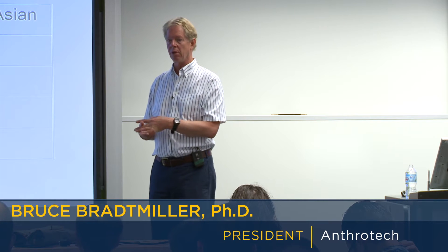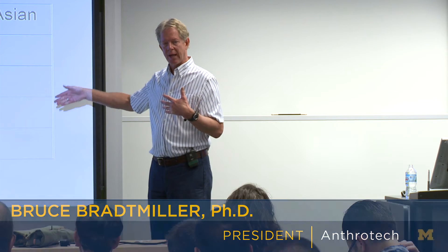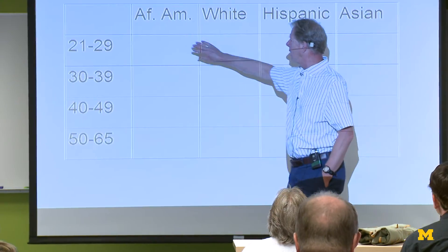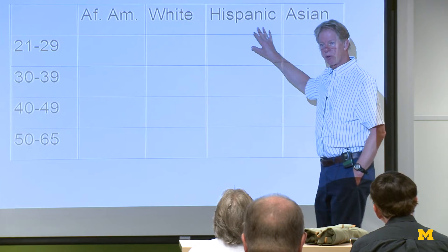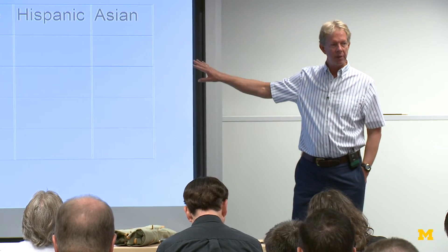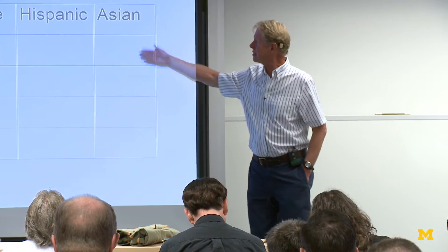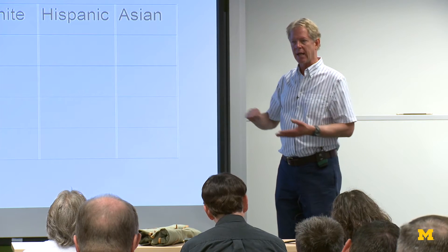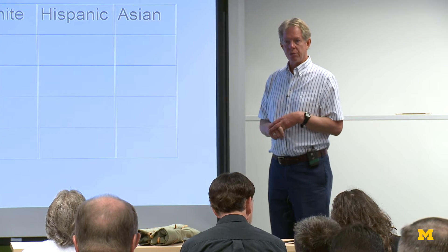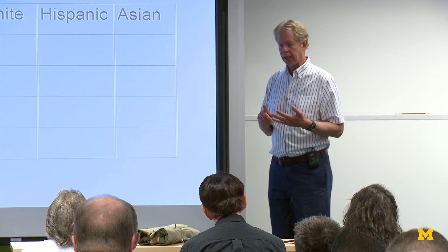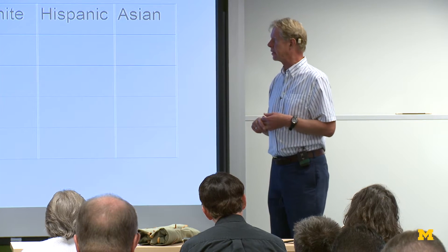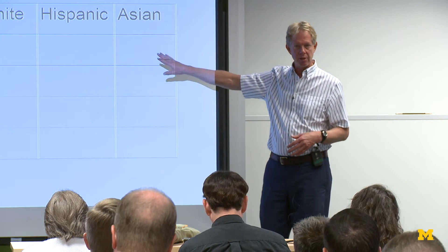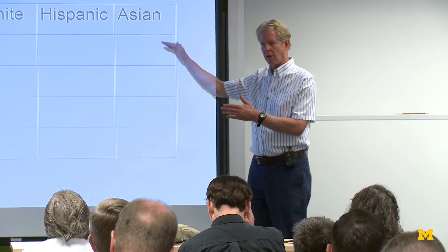When we go out to measure people, we have a stratified sampling plan. We are looking for specific numbers of people in each of these cells to make sure that we are capturing the variation that we want to capture. Sex isn't on here, but I have one of these for males and one for females. That's how, if you are going to do a valid anthropometric data collection, it doesn't have to look exactly like this, but it needs to look something like this. You need to make sure that you are capturing all of the different categories.